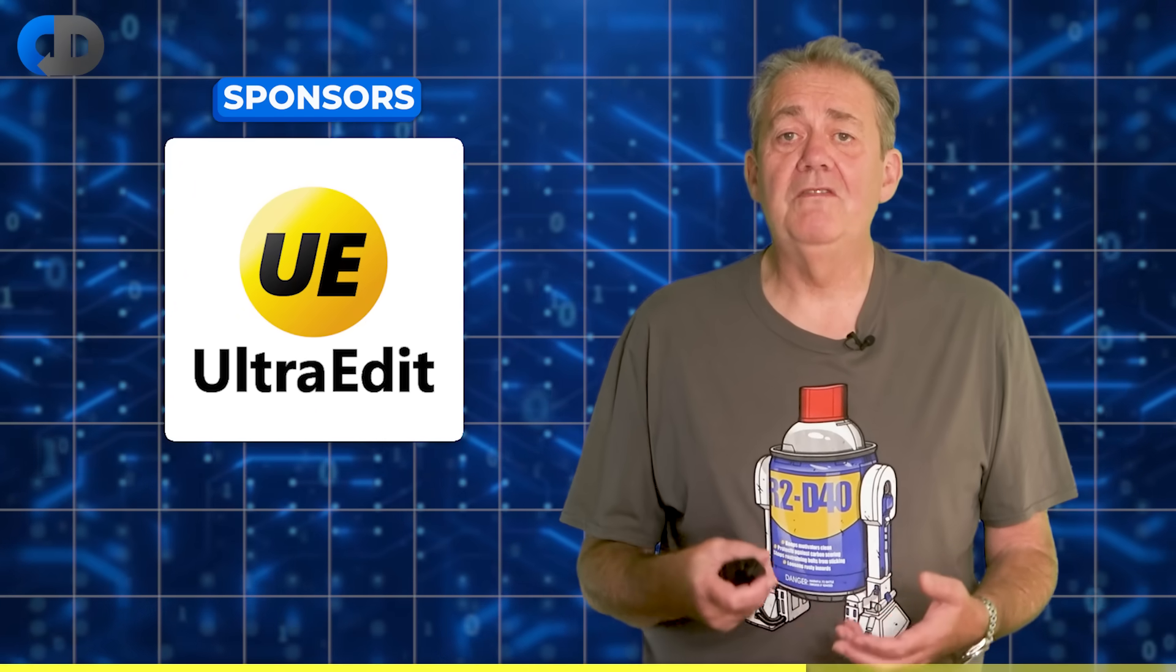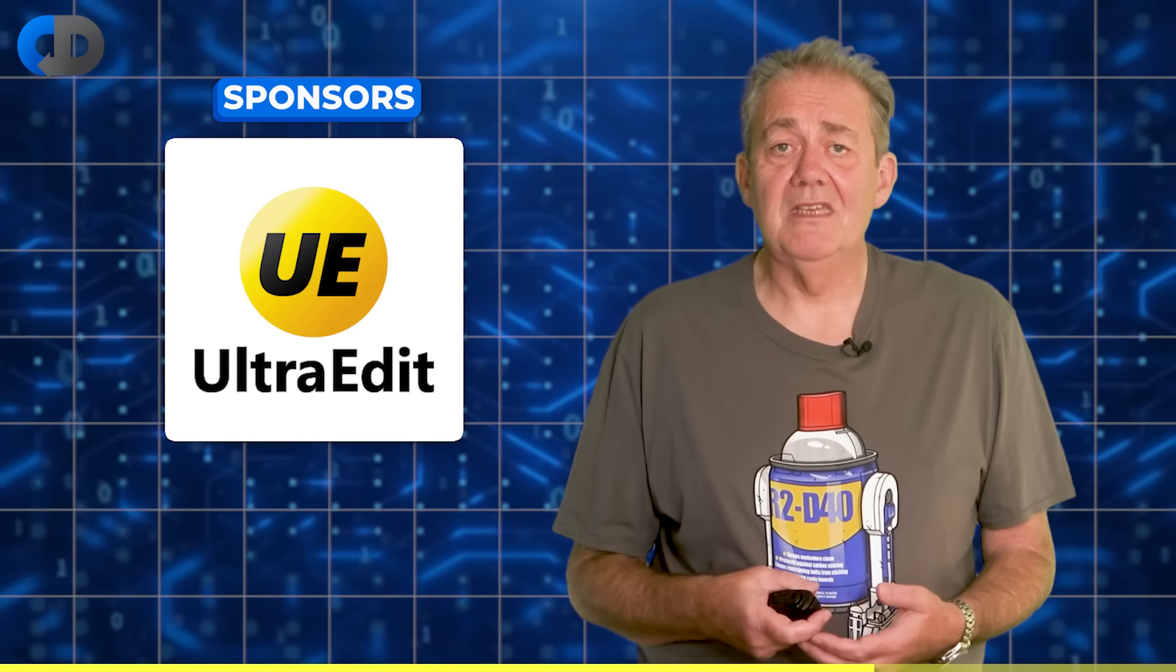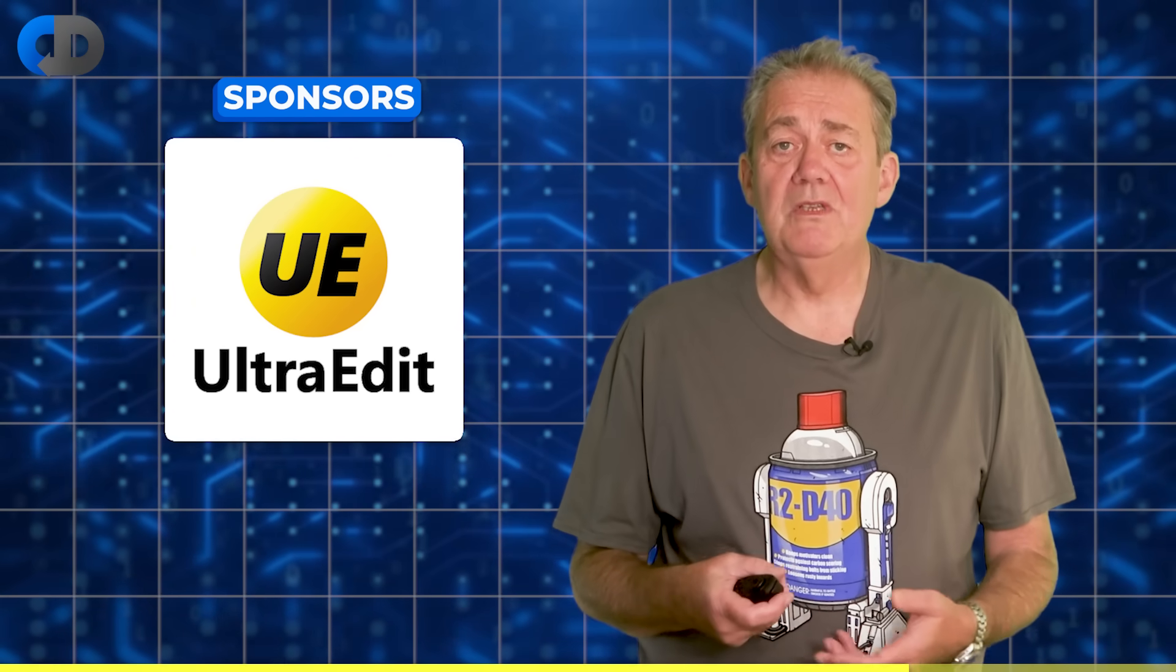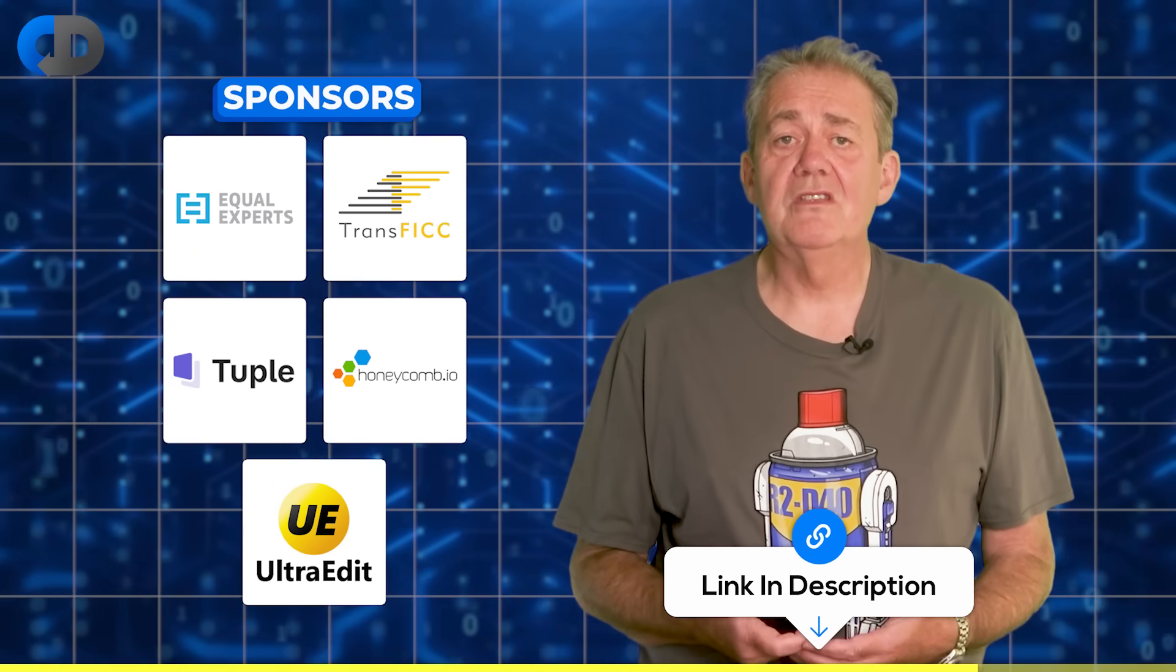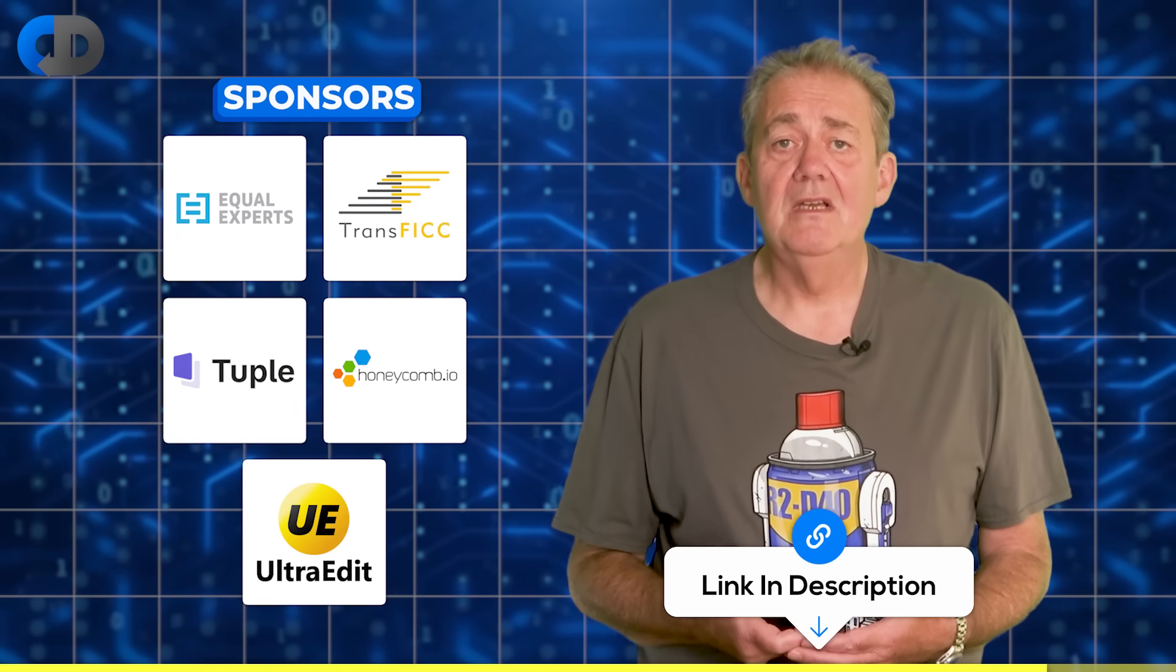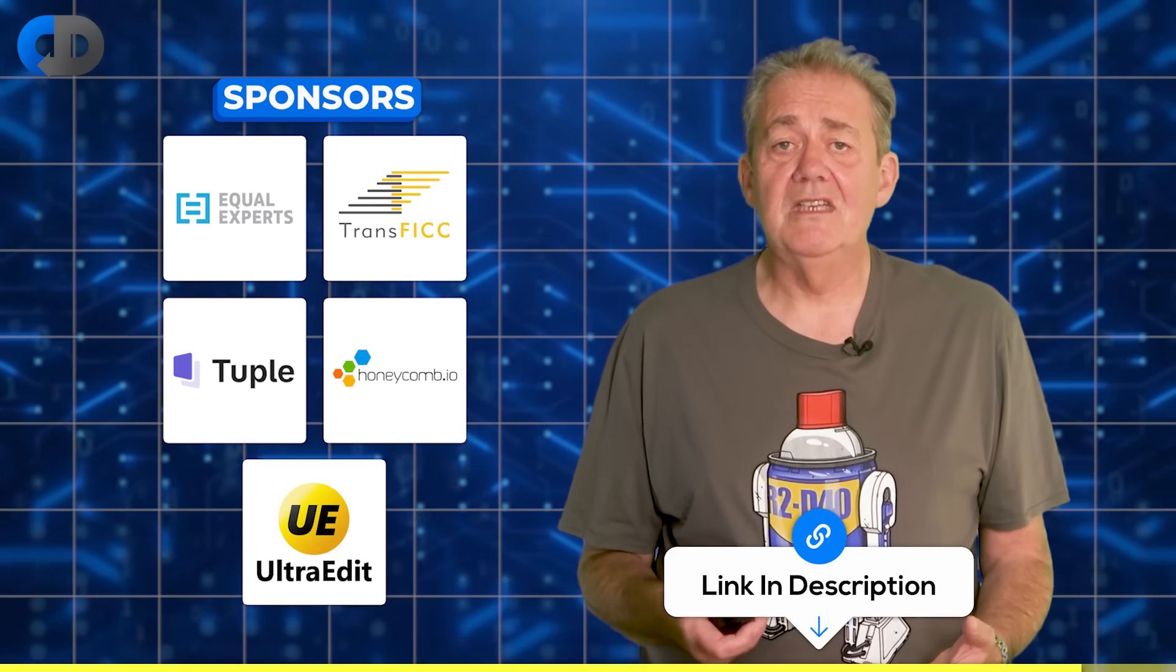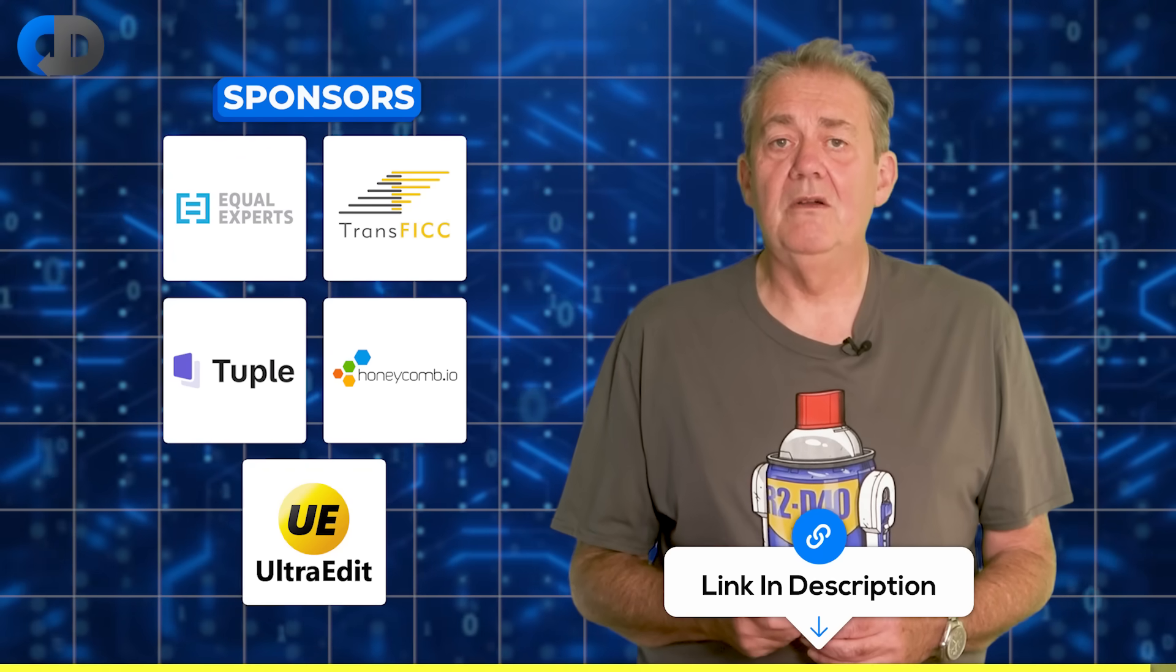Honeycomb helps engineering teams deeply understand their own production systems through observability. UltraEdit is a powerful configurable text editor capable of hex and text code editing, which boasts unrivaled performance for handling large files. All of these companies offer products and services that are very well aligned with the topics that we discuss here every week. So if you're looking for excellence in continuous delivery and software engineering, click on the links in the description below and do check them out.